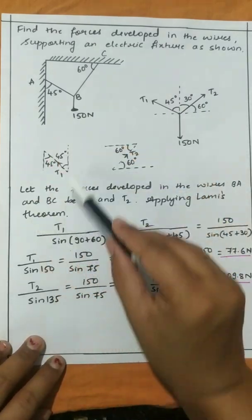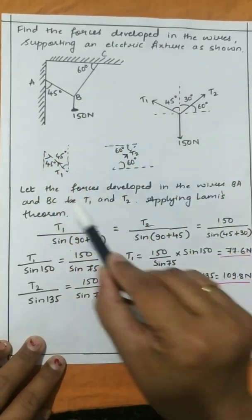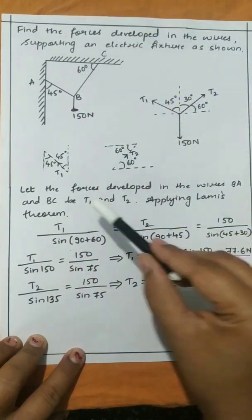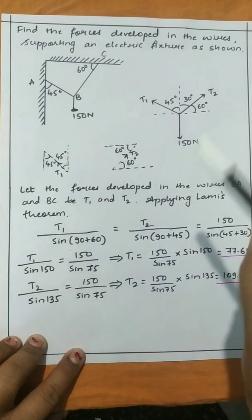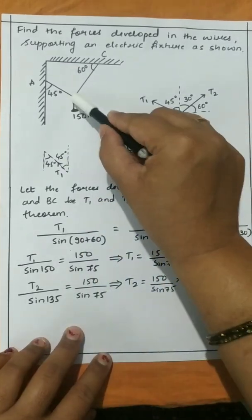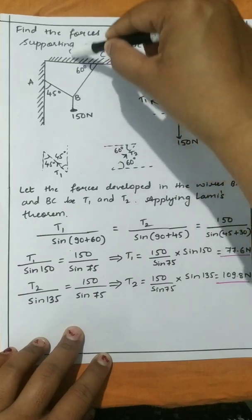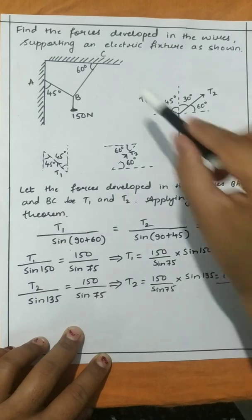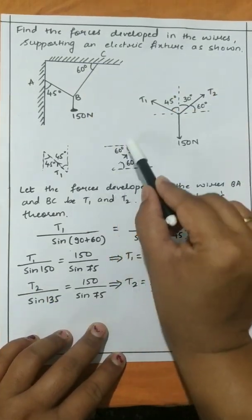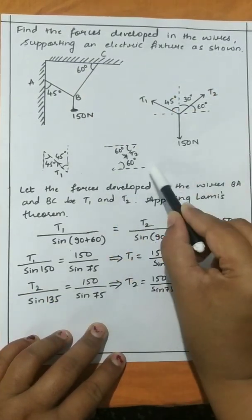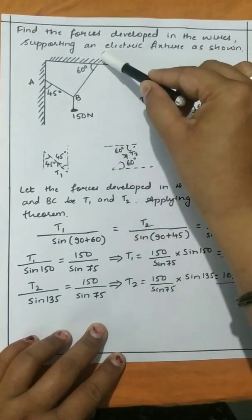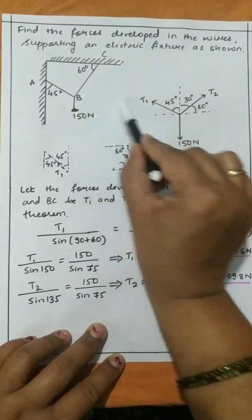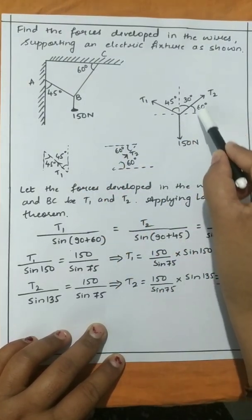Using alternate angles: the wire AB makes 45 degrees with the vertical, so if I draw a vertical here, T1 makes an angle of 45 degrees. The wire BC makes 60 degrees with the horizontal. By alternate angles, T2 also makes 60 degrees with the horizontal. So this angle is 60 degrees.